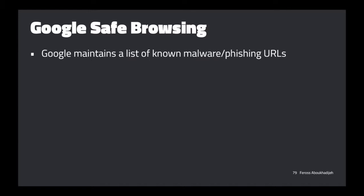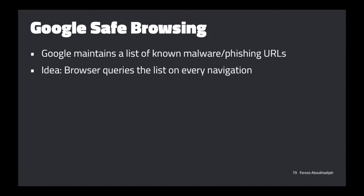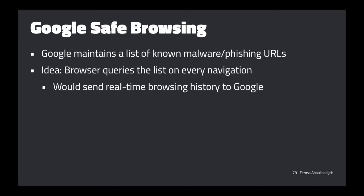There's a system devised by Google called Google Safe Browsing. The idea is Google maintains a list of known malware and phishing URLs. If we could query that list before visiting a URL and check to see if the site has been reported as a phishing page or as a page with unexpected behavior, then we can warn the user before they go to that page.